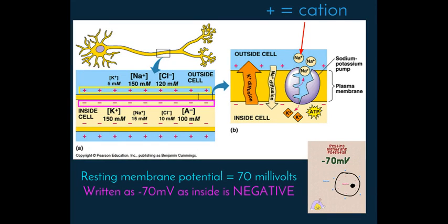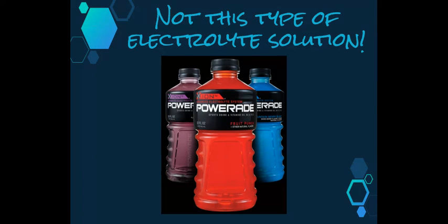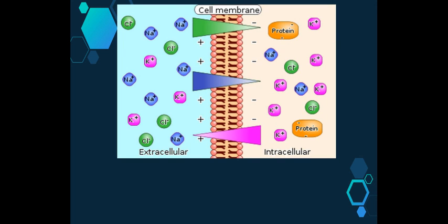This arises because neurons contain ions or charged particles. Positively charged ions are called cations and negatively charged ions are called anions. When either of these is found in solution, the solution is then known as an electrolyte solution. We've heard of these Powerade, Gatorade, etc., being called electrolyte solutions but this isn't what we're talking about at the moment. The cytoplasm of cell and the extracellular fluid are both electrolyte solutions but they differ greatly from each other. Cell membranes are impermeable to proteins and most organic phosphates so these are kept inside the cytoplasm.